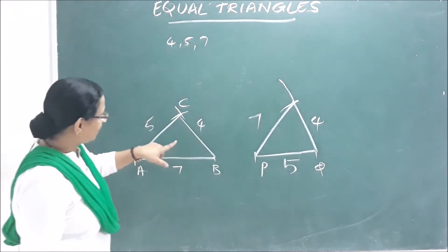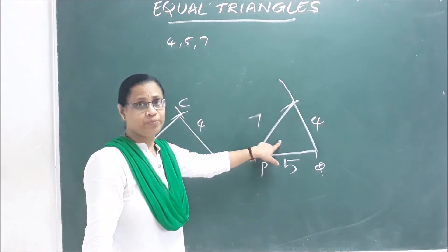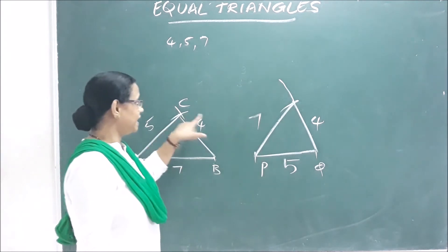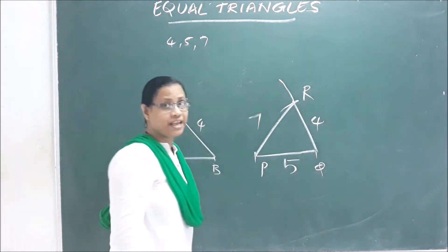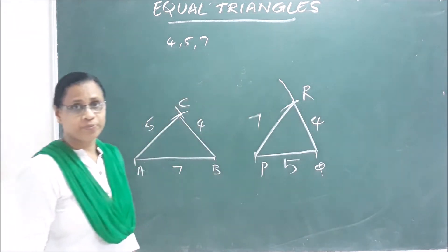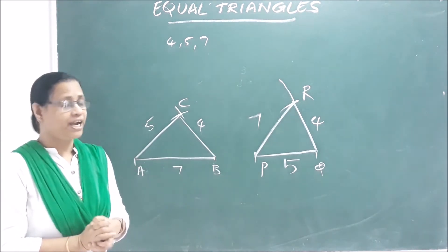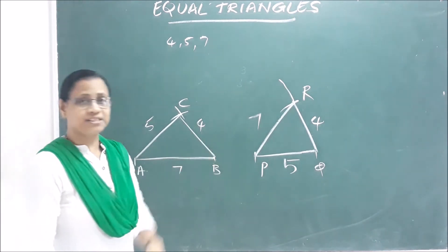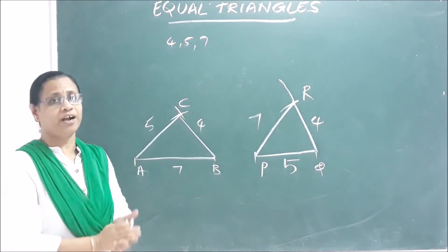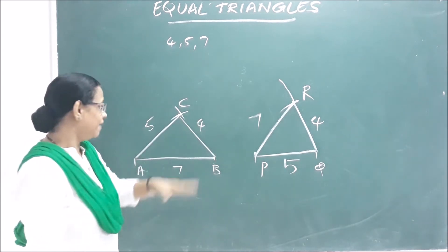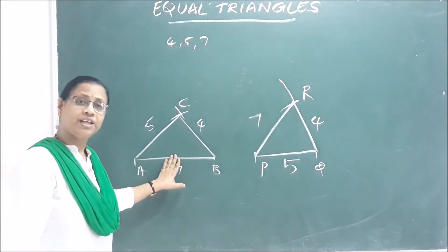So I will tell you that this triangle is the same as the other. Triangles ABC and PQR — these two triangles are the same. The same sides are equal. That is the point we have learned here. We say these two triangles are equal.